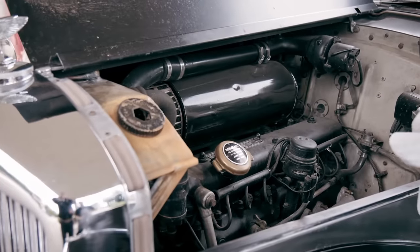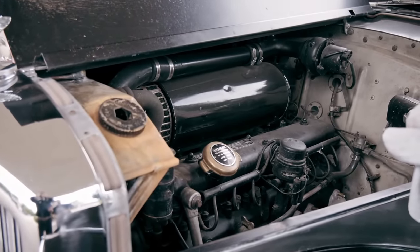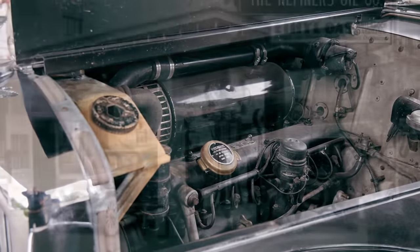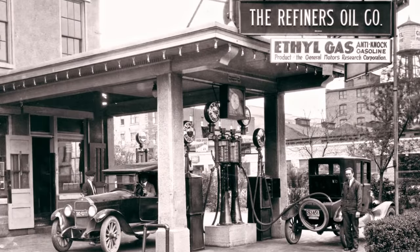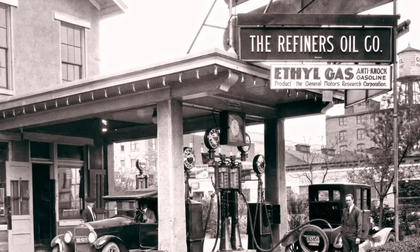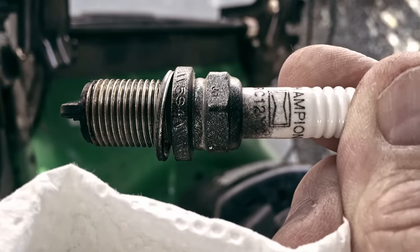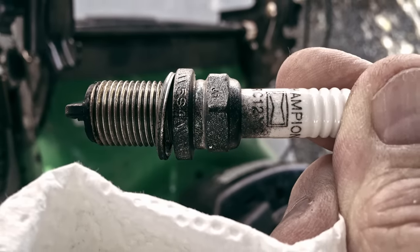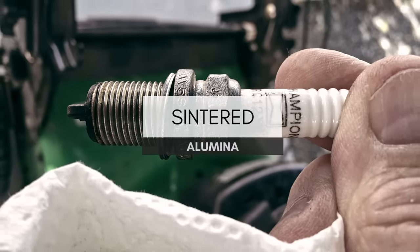As engines began to produce more power and demand on existing spark plugs started to increase, the emergence of leaded gasoline in the 1930s would also cause aggressive deposit buildup on the mineral insulator ends. To keep up with this, construction was shifted towards a single-piece design composed of a ceramic called sintered alumina.